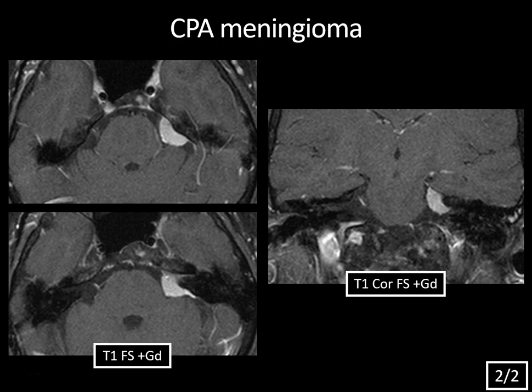Instead of forming an acute angle with the adjacent dura, you can see there's more of an obtuse angle here. Just like with schwannomas, if meningiomas are multiple, you would think about neurofibromatosis type 2. Also, occasionally you can get hyperostosis or erosion of the underlying bone with meningiomas.